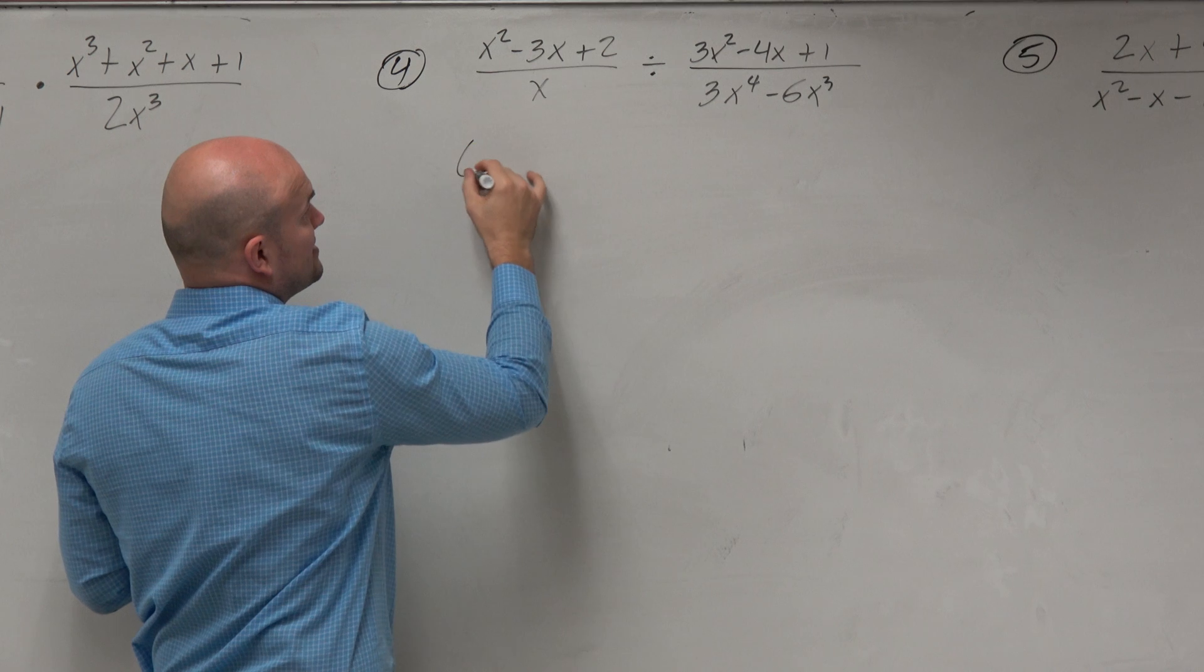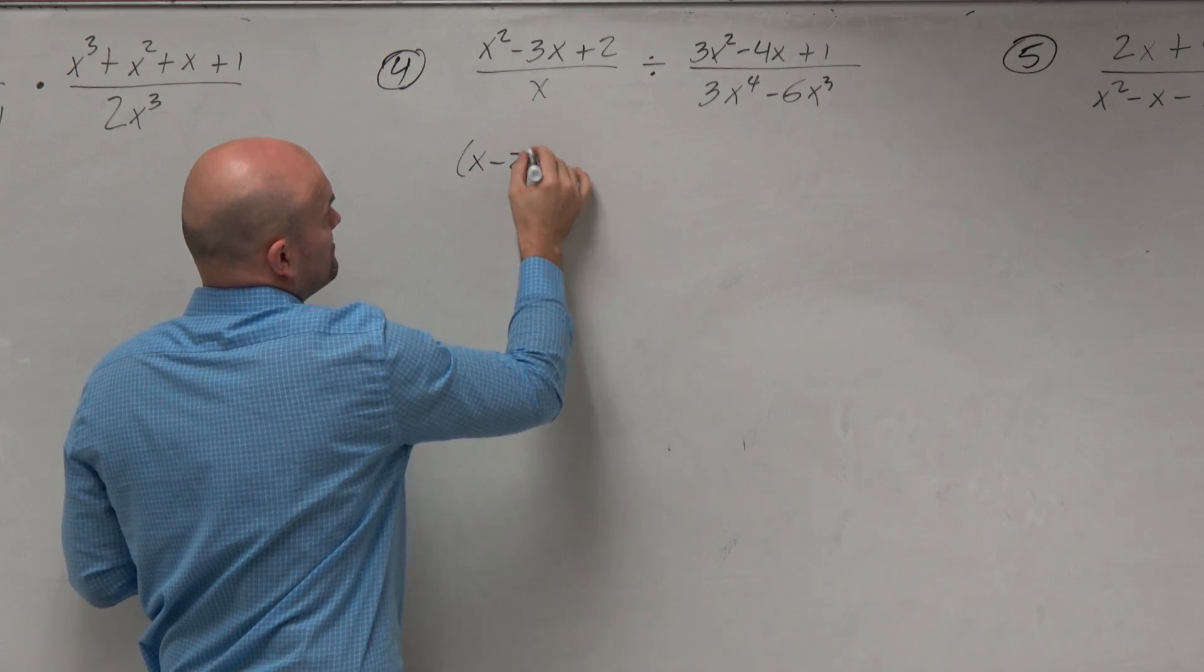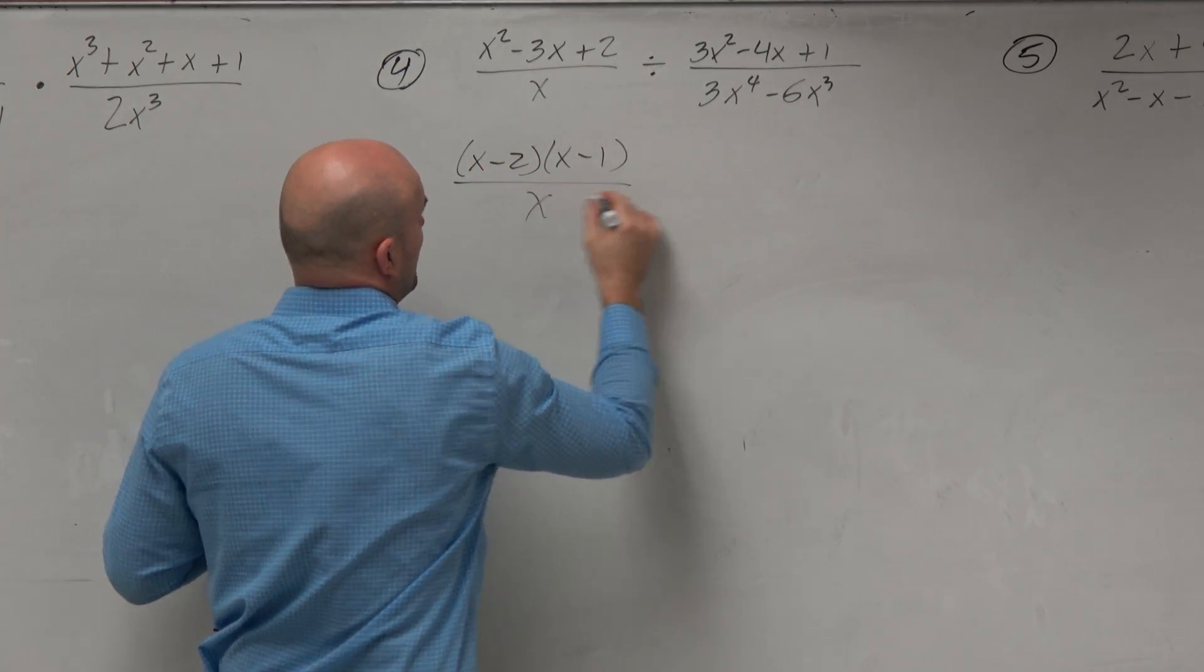So let's factor everything and do that. So this can be factored into an x minus 2 times x minus 1, all over x.